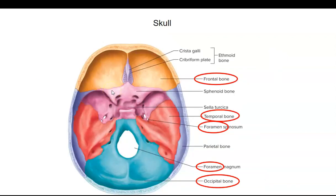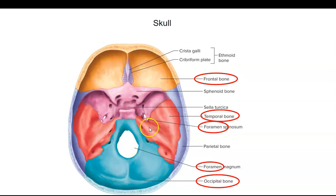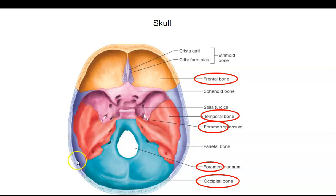This is if we took a horizontal or cross section, or transverse section, of the skull, and we're looking at the cranial vault. Frontal bone is up front. The occipital bone is in the back. And then the temporal bone is in red — we have one on each side. And then the parietal bone is in blue; we have one on each side as well.